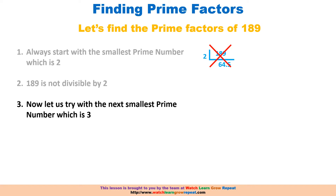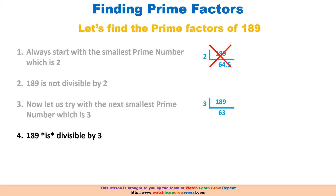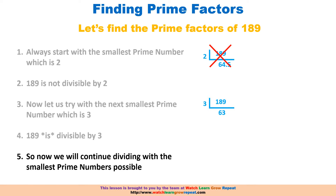Since 2 is not a factor of 189, we try the next smallest prime number, which is 3. When we divide 189 by 3, we get 63 with nothing after the decimal, so 189 is fully divisible by 3 — and we've found the first prime factor of 189. We continue dividing by the smallest possible prime number: 63 ÷ 3 = 21, and 21 is again divisible by 3, so 21 ÷ 3 = 7.